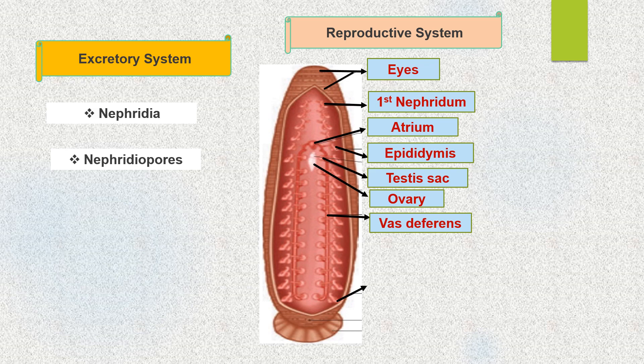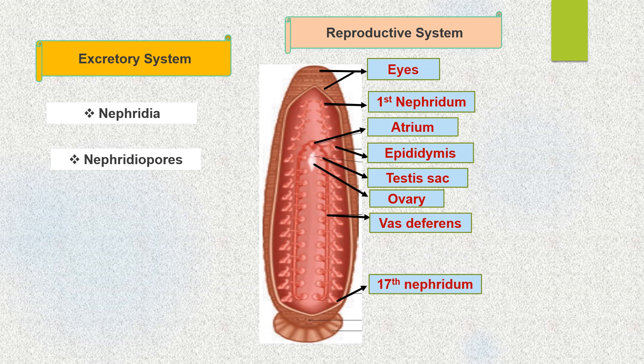Development: internal fertilization takes place, followed by cocoon formation. The cocoon, also known as an egg case, is formed around the 9th, 10th and 11th segments. Development is direct and proceeds within the cocoon, which contains 1 to 24 embryos. Young leech resembles the adult when it emerges.